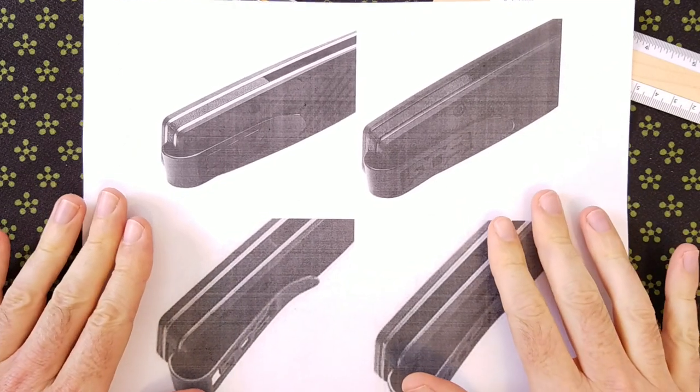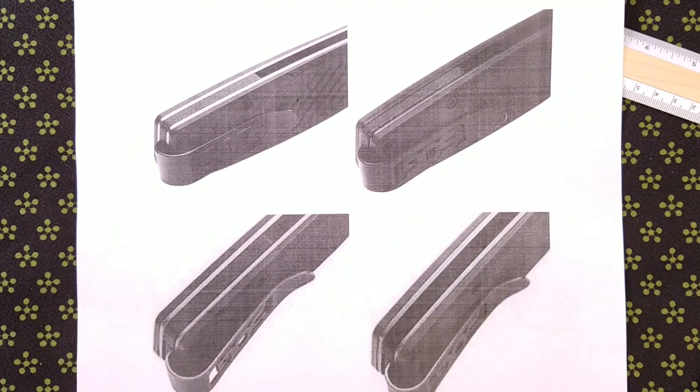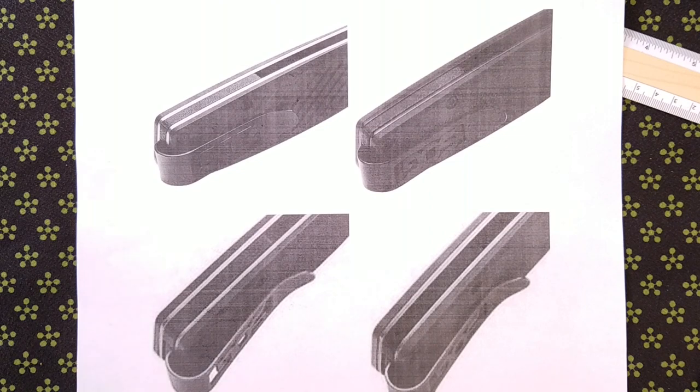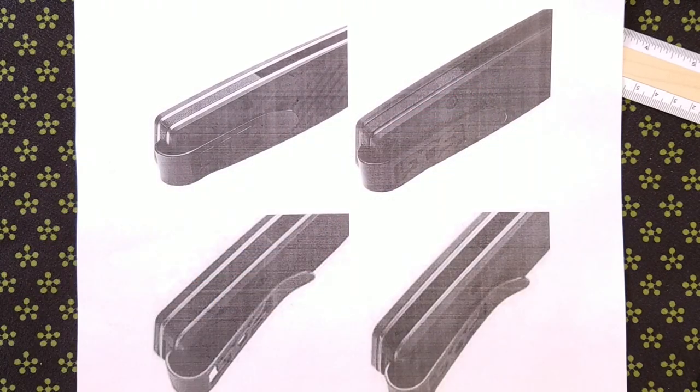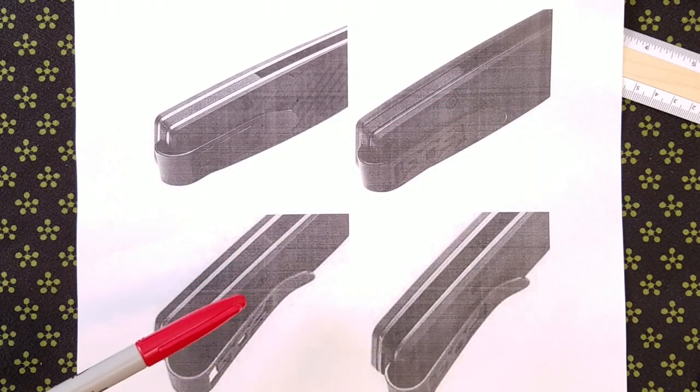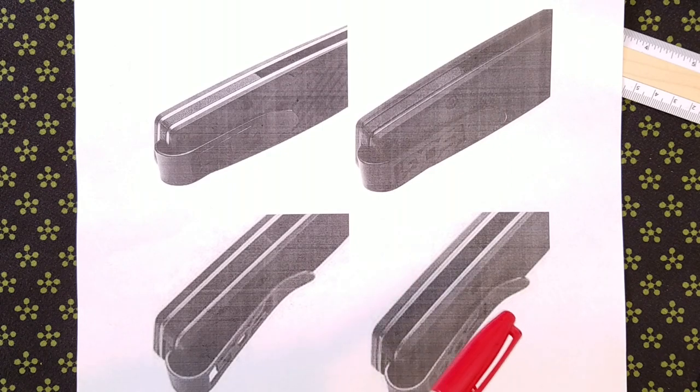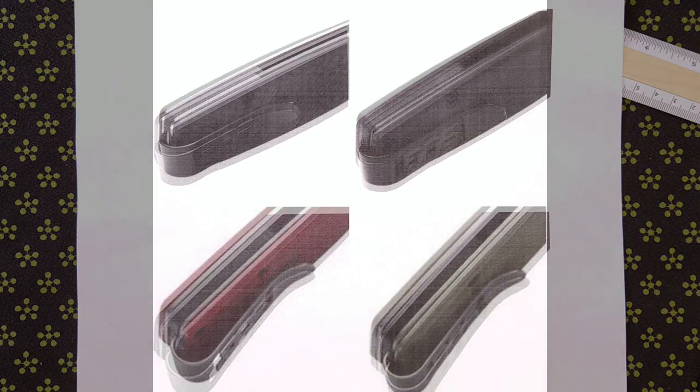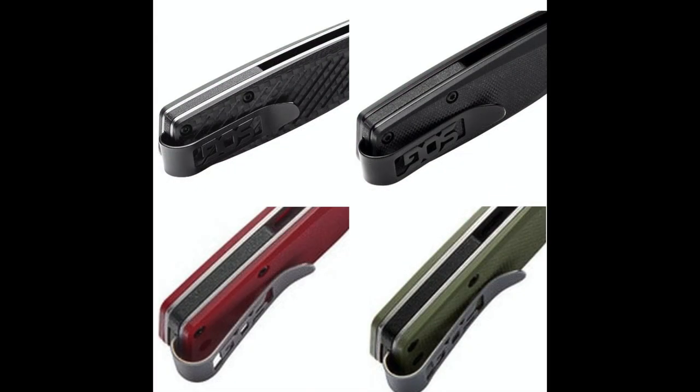So here we have some product images from the SOG website. Upper left is the black carbon fiber version, upper right is the black G10, bottom left is the red G10, and here we have the green G10. This is sort of like those spot the differences game.